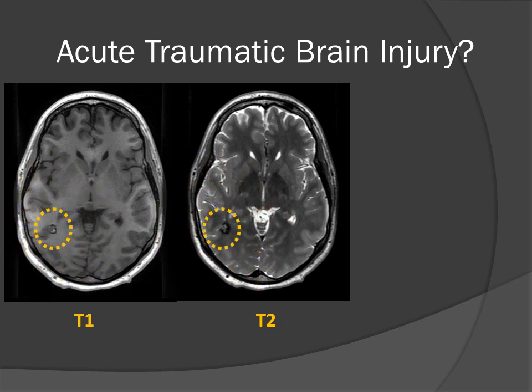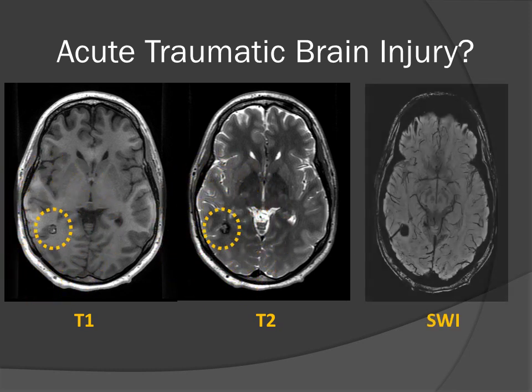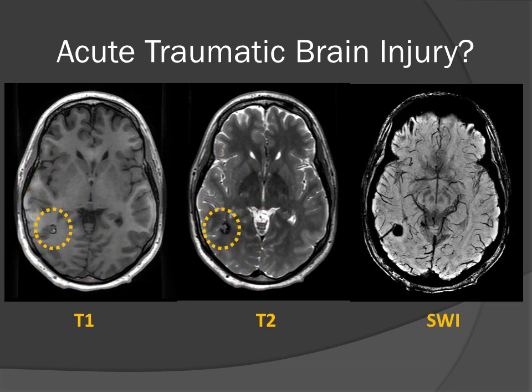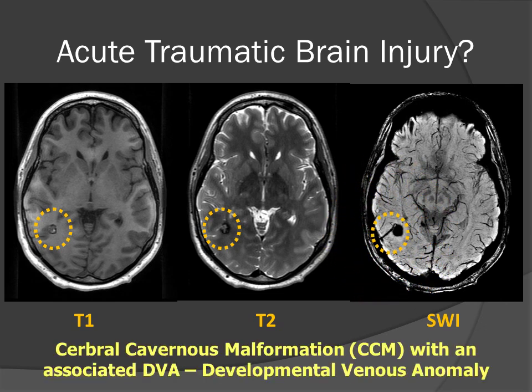When we do the susceptibility-weighted image, we see a linear structure coming off the edge of this rounded mass. This, therefore, is most likely going to be a cerebral cavernous malformation with an associated DVA or developmental venous anomaly.